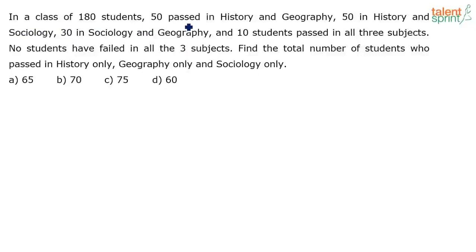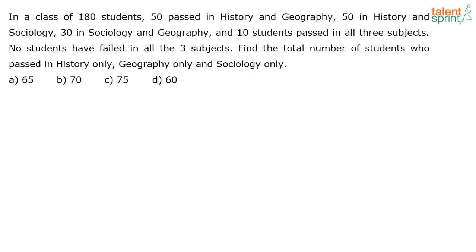In a class of 180 students, 50 passed in History and Geography, 50 in History and Sociology, 30 in Sociology and Geography, and 10 students passed in all three subjects. No students have failed in all three subjects. Find the total number of students who have passed in History only, Geography only, and Sociology only. Options given are 65, 70, 75, and 60.